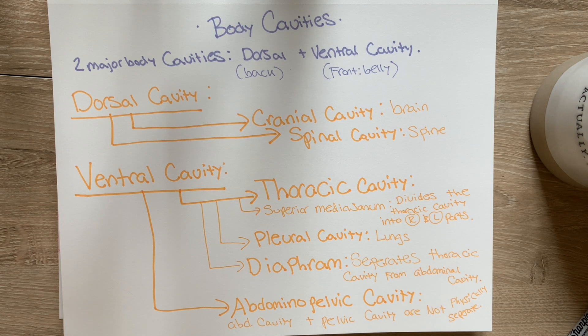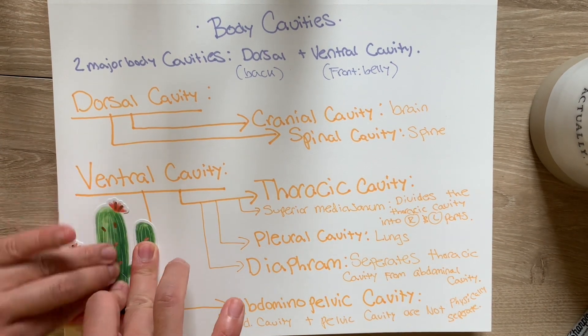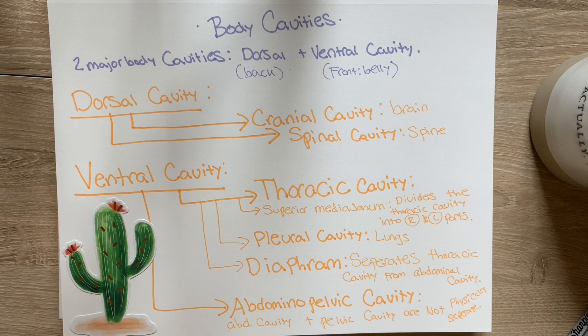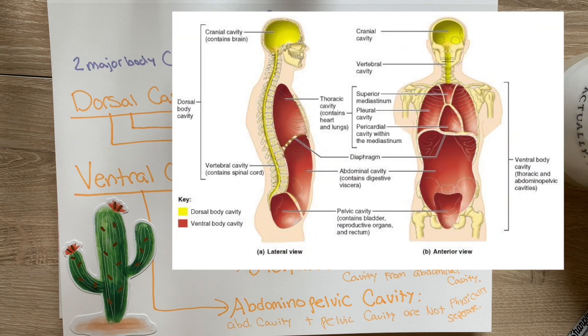Let's move on to body cavities. There are a lot of cavities and cavities within cavities, so try to stay organized. We start with the two major body cavities: the dorsal cavity, located in the back of the body, and the ventral cavity, located in the front. Within the dorsal cavity, you have the cranial cavity — which encloses the brain — and the spinal cavity — which encloses the spine.